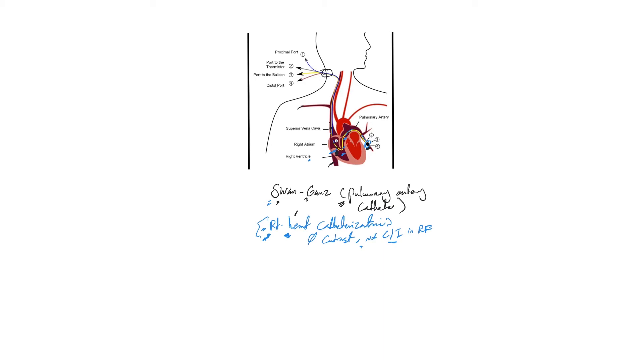As you see, the catheter passes through the superior vena cava to the right atrium, right ventricle, and pulmonary artery. So it can give you measurements about the right atrial pressure, which is equivalent to the CVP, right ventricular pressure, pulmonary artery pressure, and wedge pressure.